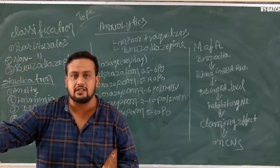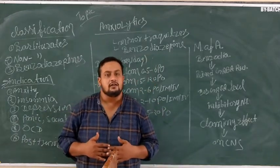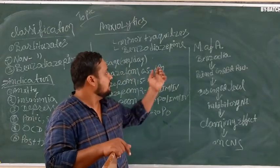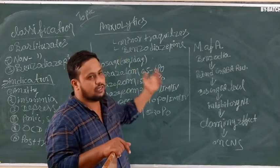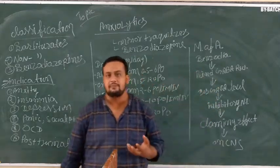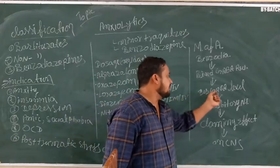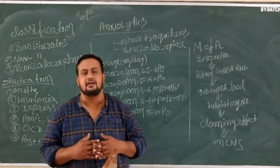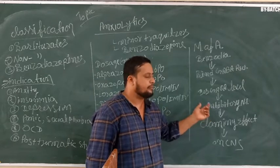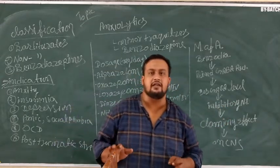Now we are going to discuss the mechanism of action of anxiolytic drugs — which type of neurotransmitter is involved. First, anxiolytic drugs like alprazolam bind with the GABA receptor. Binding to the GABA receptor increases the GABA level. GABA is a particular inhibitory neurotransmitter.